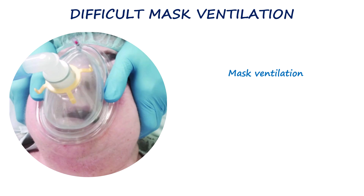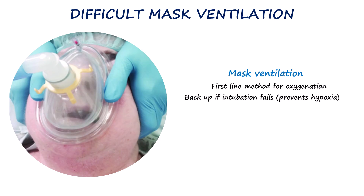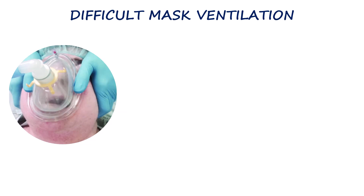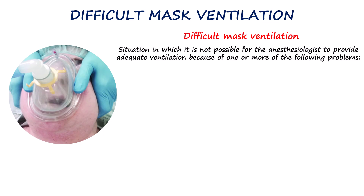Let's begin with how we anticipate and recognize difficult mask ventilation. Mask ventilation is the first-line method to oxygenate the patient, primarily used before other airway strategies such as intubation or supraglottic airway insertion are planned or attempted. During anticipated or unanticipated difficult intubation, mask ventilation serves as a backup to prevent hypoxia if initial intubation attempts fail, providing time to reassess the airway, optimize patient positioning, and decide on further strategies. According to the American Society of Anesthesiologists,